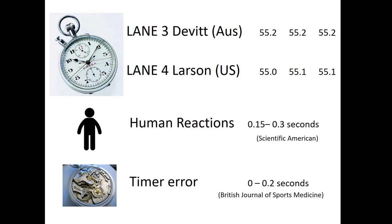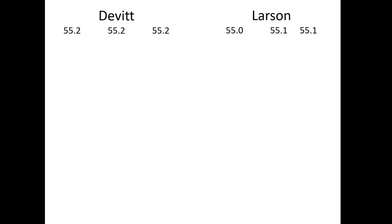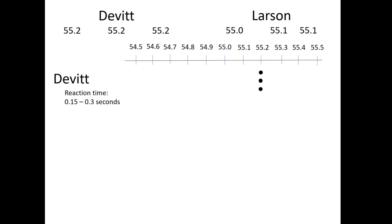Let's see what happens when you incorporate these errors into these apparently definitive race times. So there are Devitt and Larson's times, and there is a timescale from 54.5 up to 55.5 seconds. Now, according to these times, Devitt finished in 55.2 seconds. All three timekeepers agreed. But remember, they were reacting to seeing Devitt touching the end of the pool. And their reactions took place in a finite amount of time, which could have been different for each timer. Which means Devitt's true time was somewhere between 54.9 and 55.05 seconds.